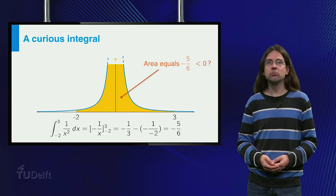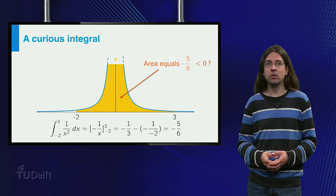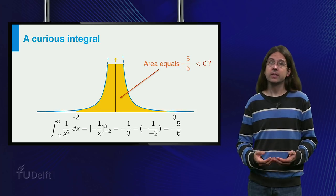We say that x equals 0 is an improper point of this integral, and that the integral of 1 over x squared from minus 2 to 3 is an improper integral.